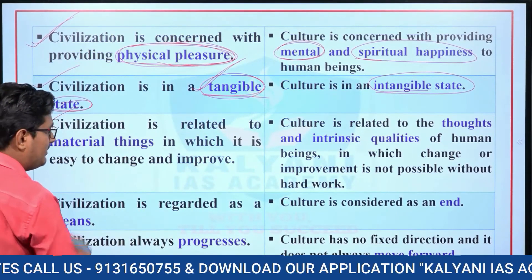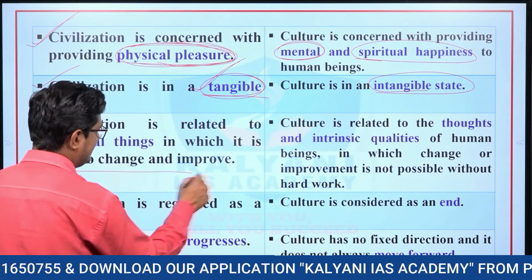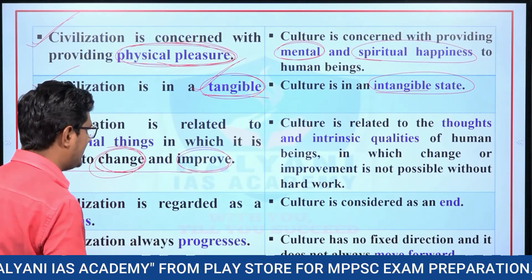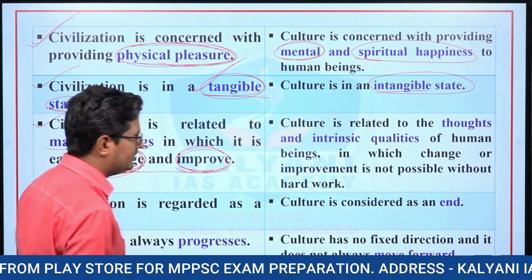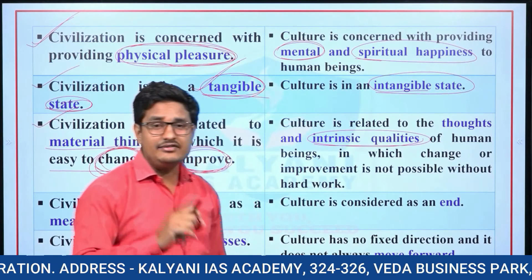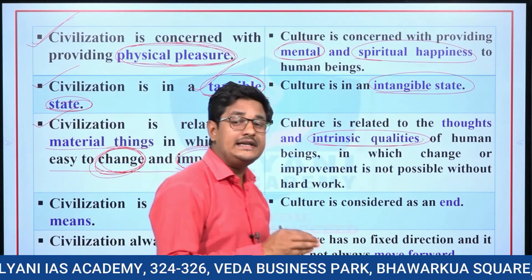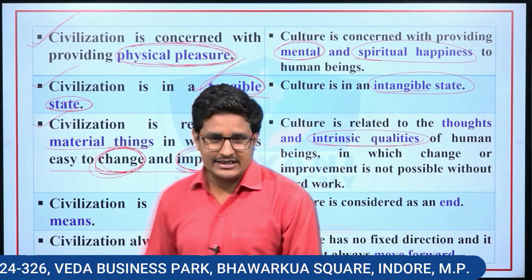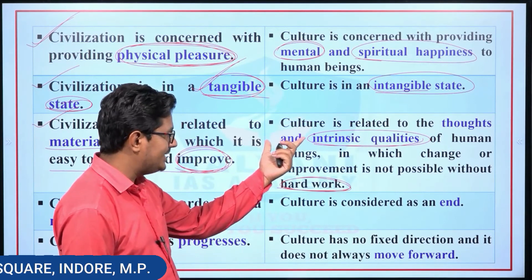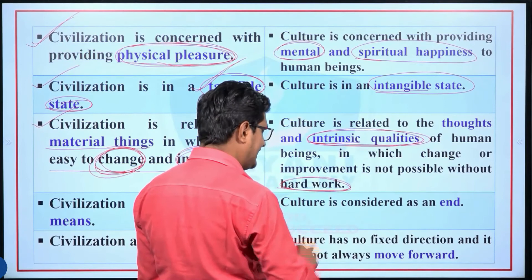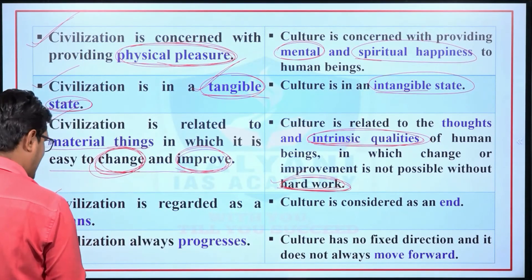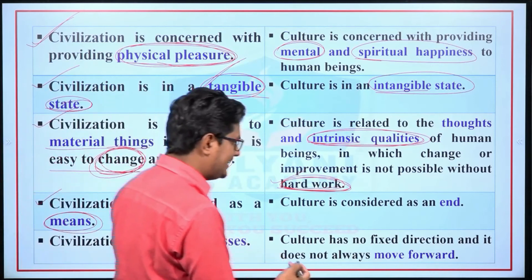Seventh difference: civilization is easy to change and improve. Since it has utility and satisfies human needs, changing and improving civilization is easy. But culture is related to thoughts and intrinsic qualities of human beings, in which changes and improvement do not happen as easily. So changing culture requires time and hard work. Civilization is regarded as a means, while culture is considered the end.